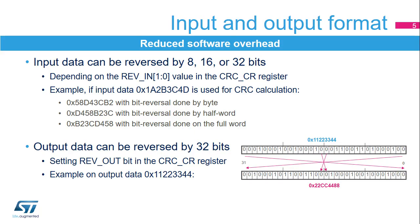The input and output format is fully configurable to reduce the software overhead. It allows the application to manage different endian schemes. The input data can be reversed and performed on 8, 16, or 32 bits, depending on the rev-in bits in the CRC-CR register. For example, input data 0x1a2b3c4d is used for CRC calculation as 0x58d43c4d with bit reversal done by byte.